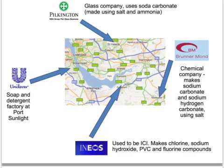Ineos, which used to be called PVC, based around Runcorn, makes chlorine, sodium hydroxide, PVC, and other halide compounds — for example, fluorine compounds and bromine compounds.